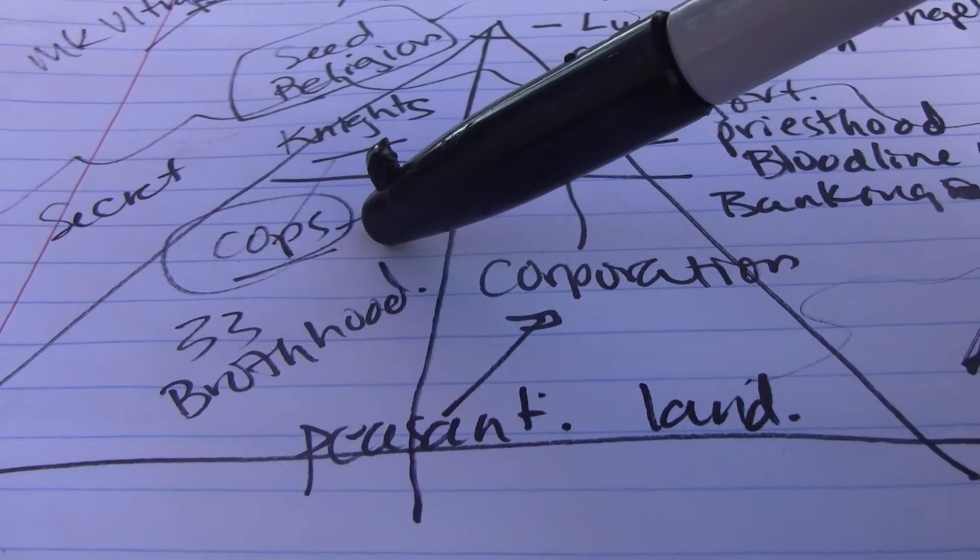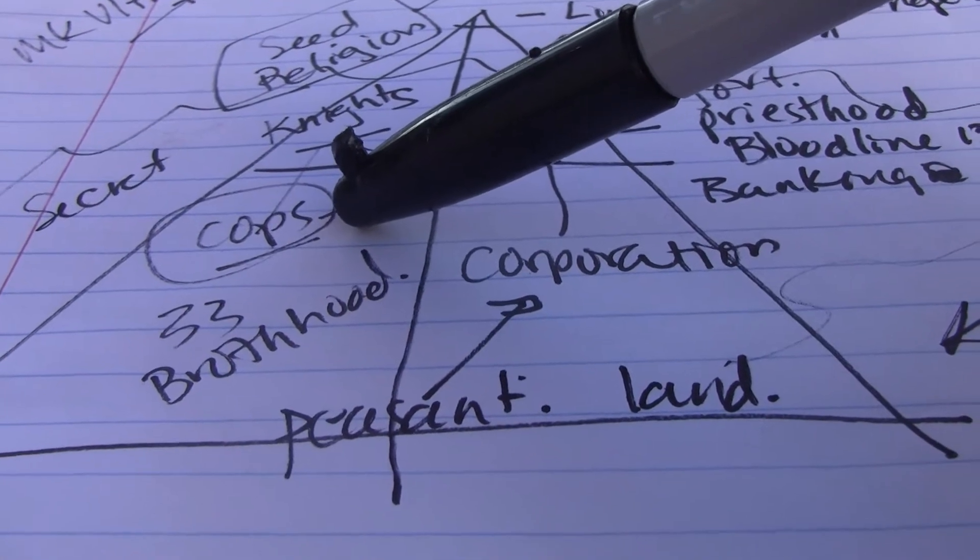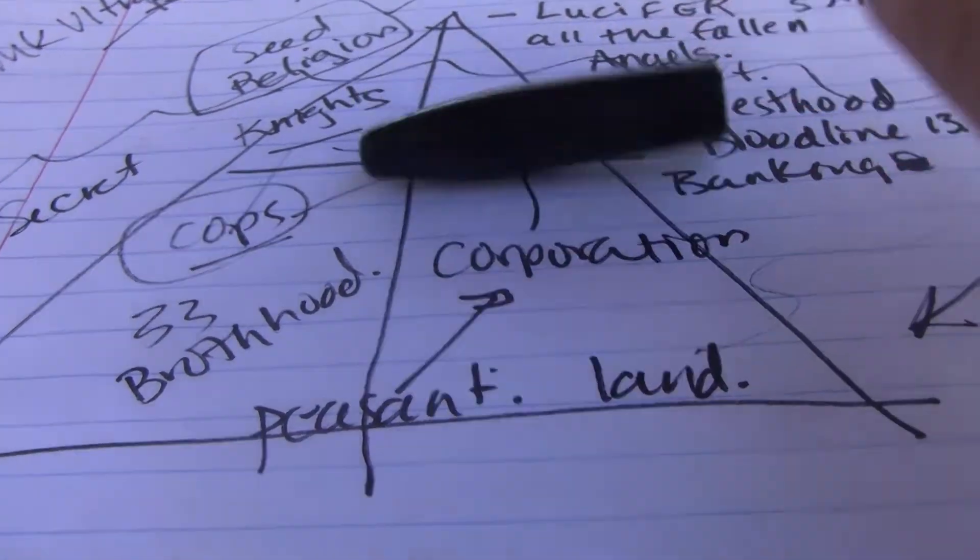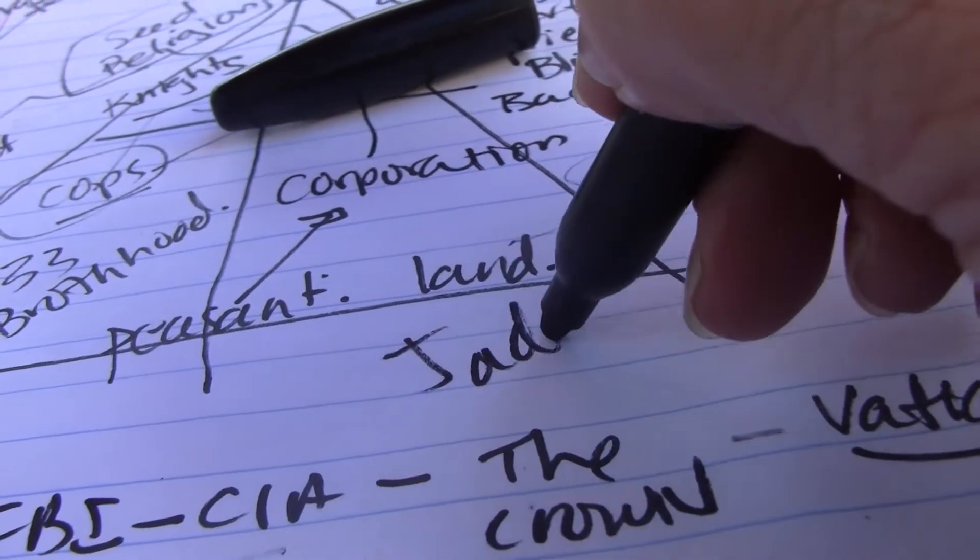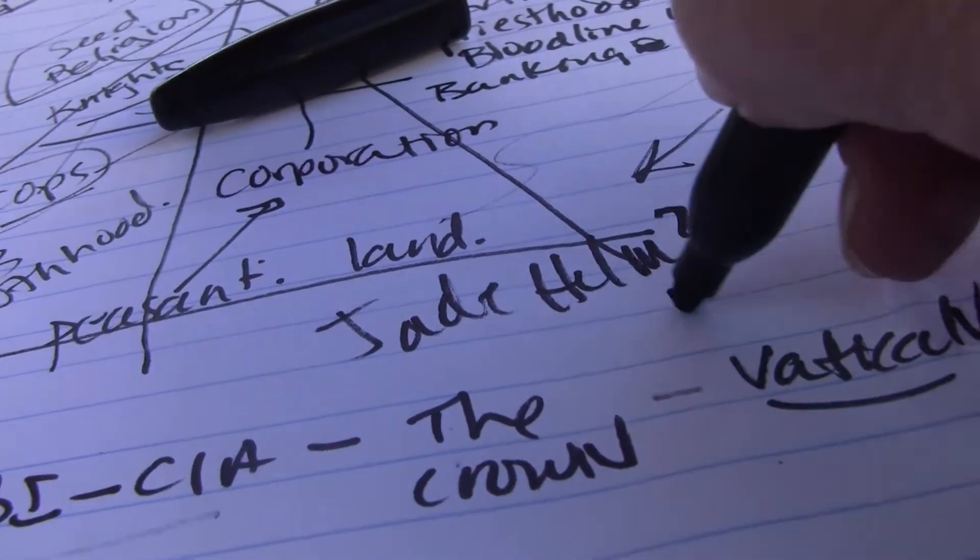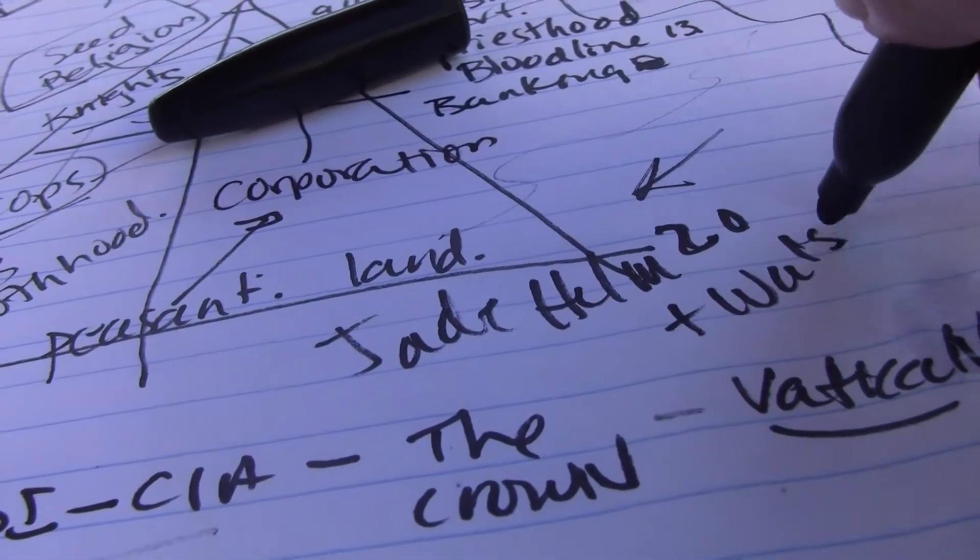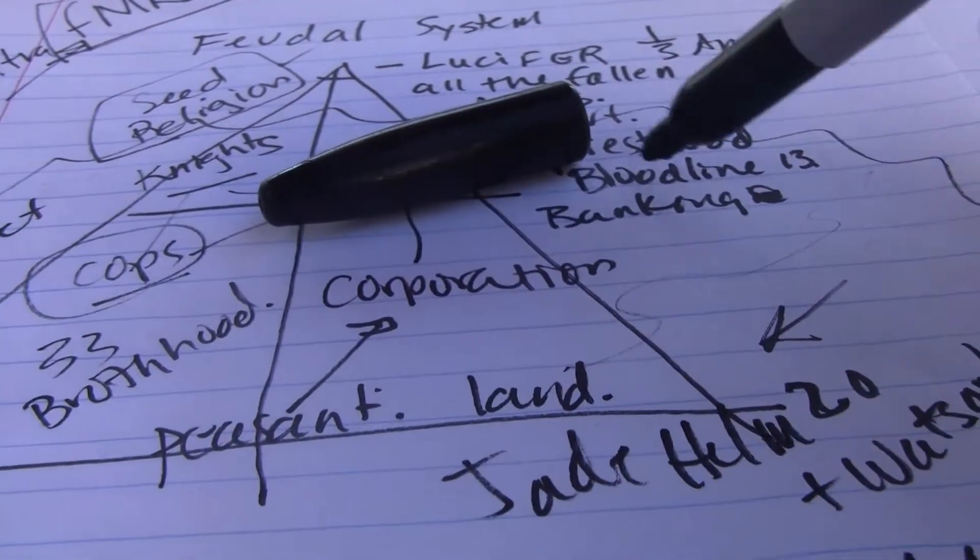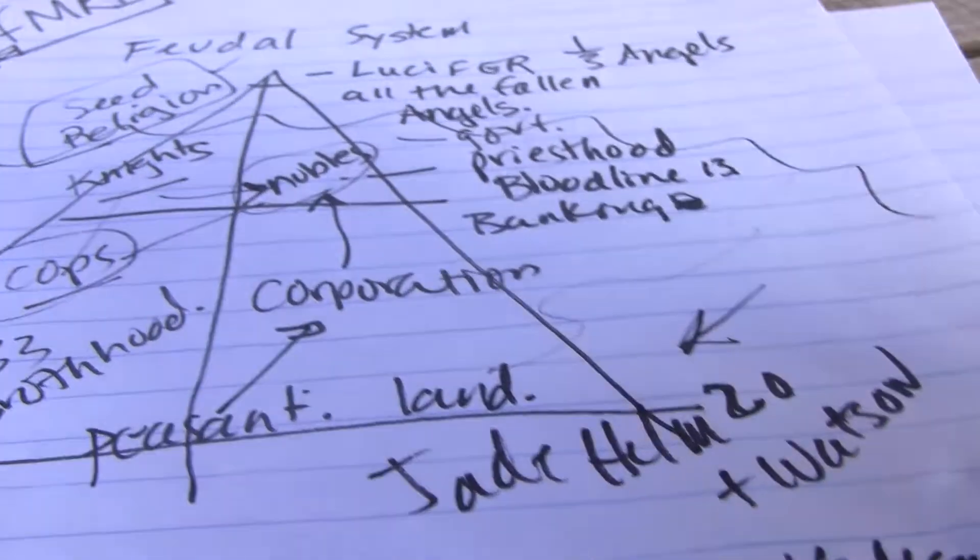The hardcore evidence is on the hard drives because they use Jade Helm. They use Jade Helm 2.0 plus Watson. I think that's software or a computer—a computer software program. This is where all the information gets stored.